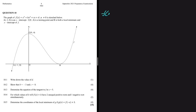In this question we're given a cubic function f(x) = x³ + bx² + cx + d. Question 10.1 asks us to write down the value of d. Before we look at our sketch, let's look at the equation and see what d means — I've circled it in red.